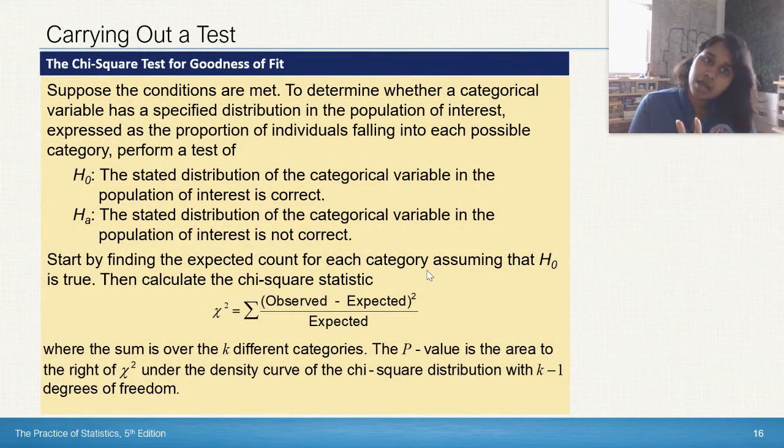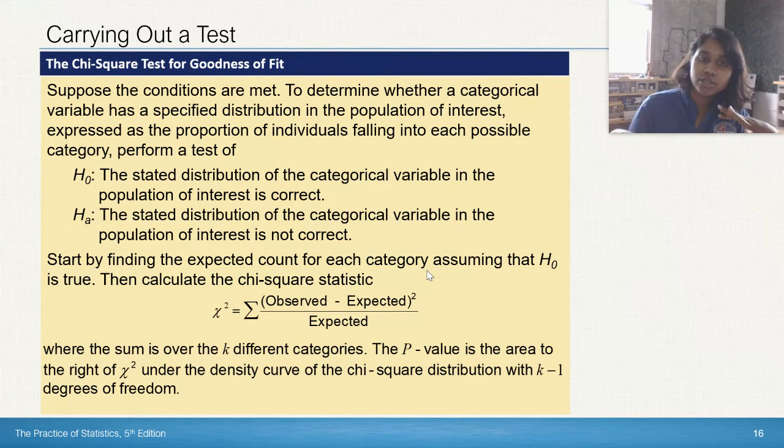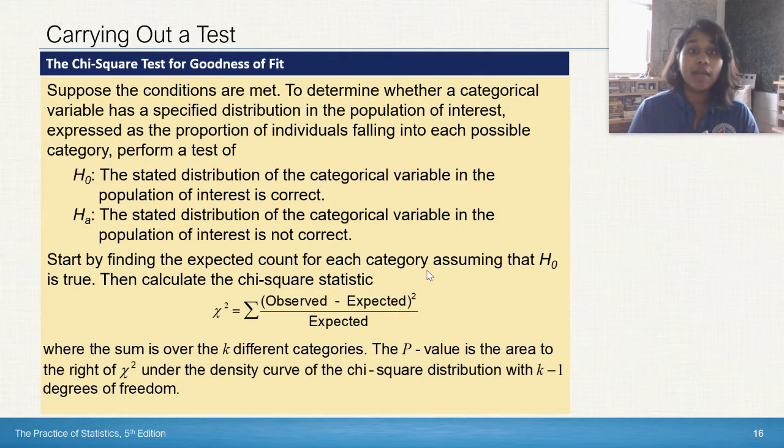All right. Here's a little summary on the chi-square test of goodness for fit. It really is kind of that state plan to conclude. You can read through this on your own, copy it, take a photo, whatever makes you happy. But you can see it is very formulaic kind of how you deal with this.